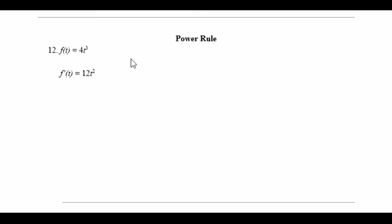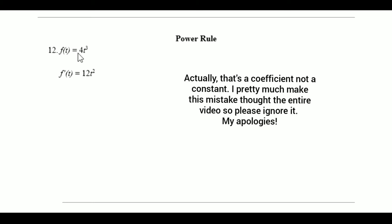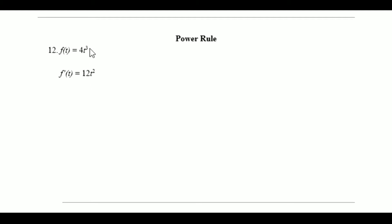You're going to want to do two things. One of which is to bring down this power out to the front and multiply by whatever constant you have, which in this case is 4. So you have 3 times 4, which gives you 12. And the next thing is to reduce the power by 1, so it's 3 minus 1, which gives you 2. The derivative is 12 times t to the second power.